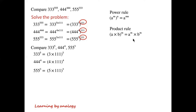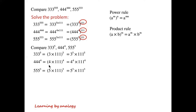The product rule says a times b, all to the power of m, equals a to the power of m times b to the power of m. So we can write 3 to the power of 5 times 111 to the power of 5; similarly, 4 to the power of 4 times 111 to the power of 4; and 5 to the power of 3 times 111 to the power of 3.